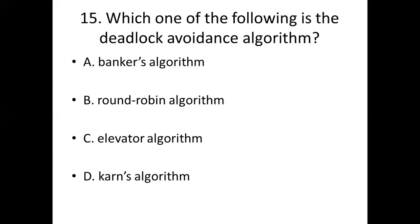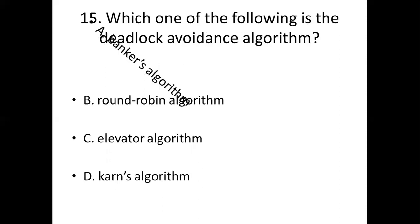Fifteenth bit: Which one of the following is the deadlock avoidance algorithm? Option A: Banker's algorithm. Option B: Round robin algorithm. Option C: Elevator algorithm. Option D: Kern's algorithm. Answer: Option A — Banker's algorithm.